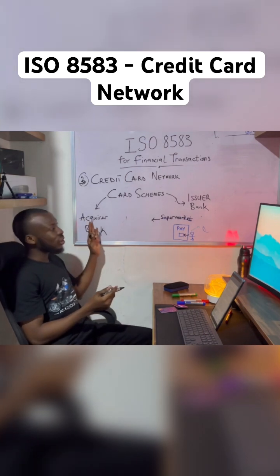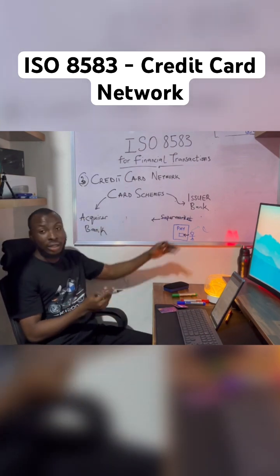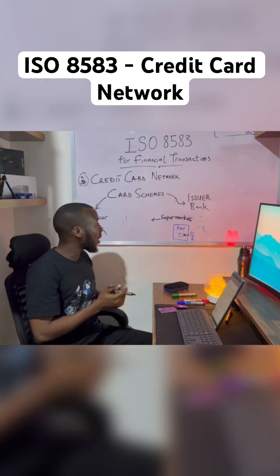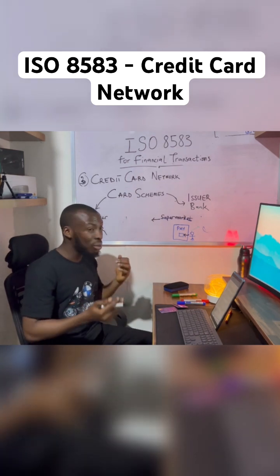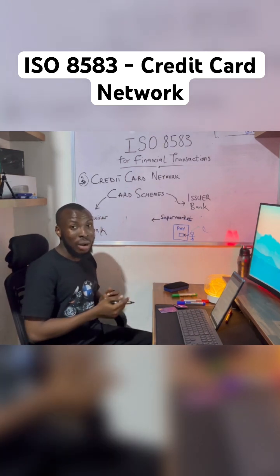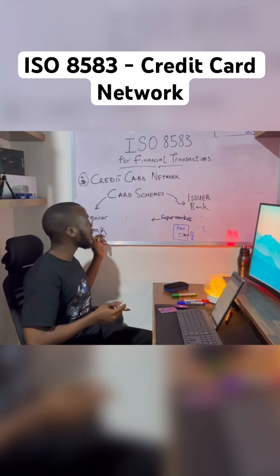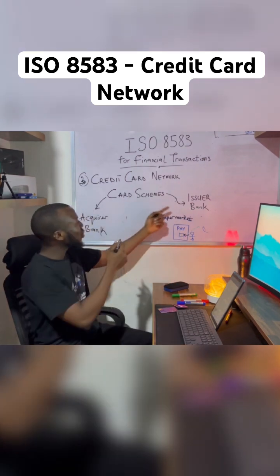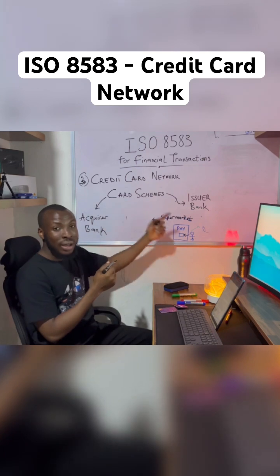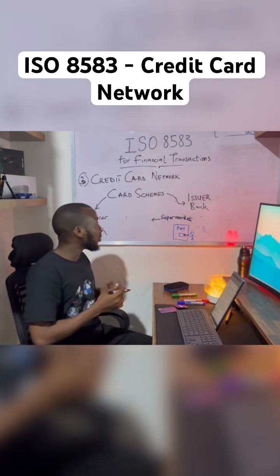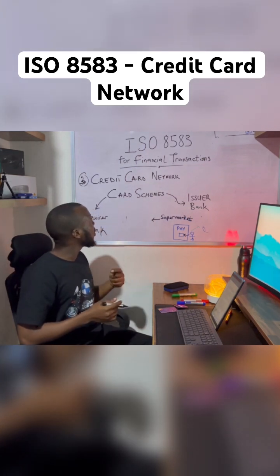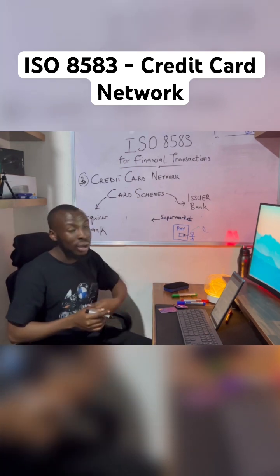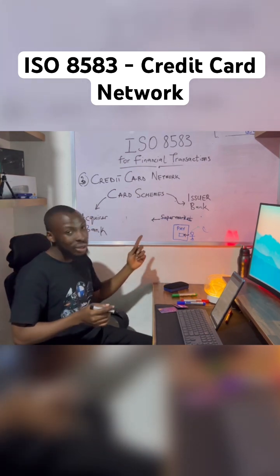They sit between the acquirer bank and the issuer bank. When there is a request to perform a particular transaction, the acquirer bank might not be able to speak directly to the issuer bank. So the conversation goes via this channel — from the acquirer bank to the card scheme, through the credit card network, and down to the issuer bank.